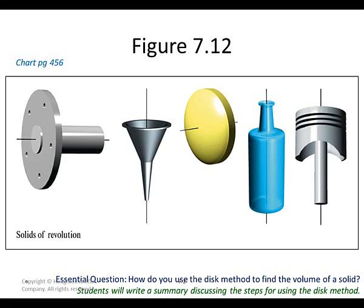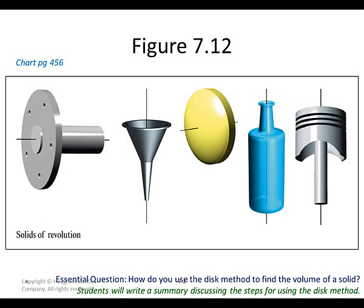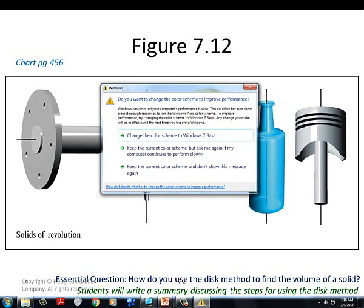That button gives you the integral symbol. Go from negative one to one, then type var — the top function happened to be f1 — make sure you know which is which before you do it — minus the bottom function, var f2, and then put dx at the end and hit enter.